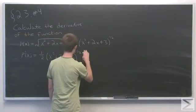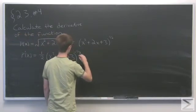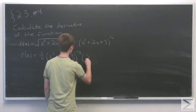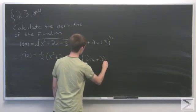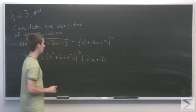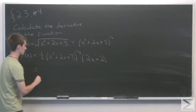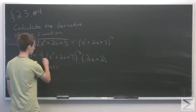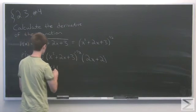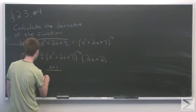The derivative of the inside polynomial is 2x plus 2. This simplifies to x plus 1 — the 2s cancel out — over the square root of x squared plus 2x plus 3 in the denominator.